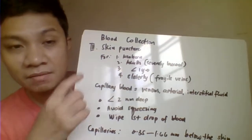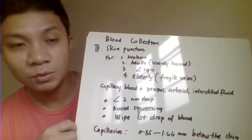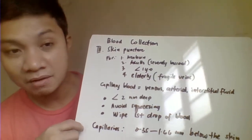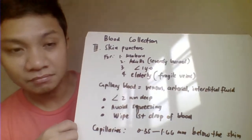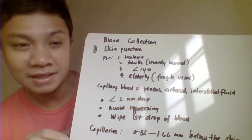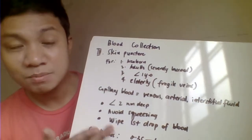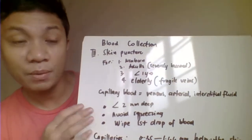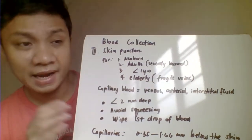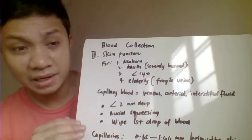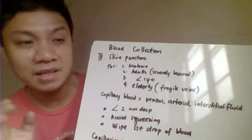If you are just doing a skin puncture, you will only be collecting a small volume of blood. This will not be possible if the patient has several tests to be performed on the blood sample. Small samples from skin puncture are only applicable for limited tests — like when you are doing a manual CBC, blood typing, or blood smear preparation.